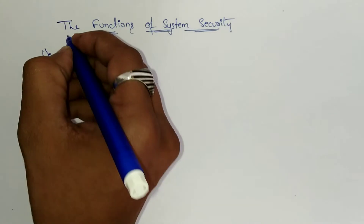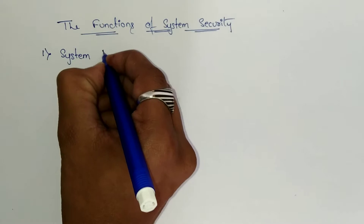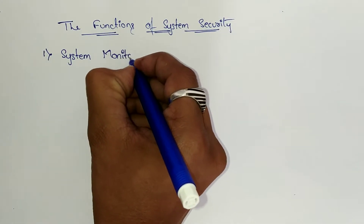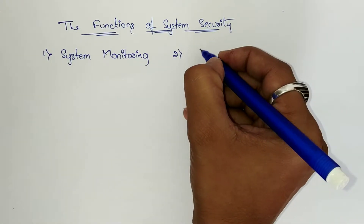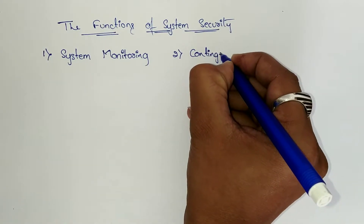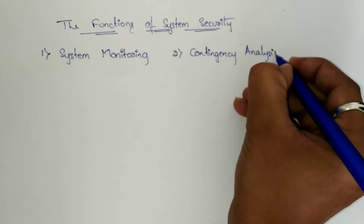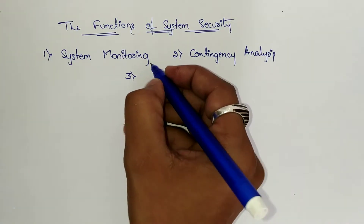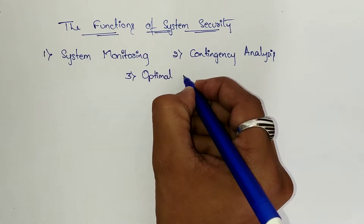The first one is system monitoring. The second one is contingency analysis. And the third one is optimal power flow.